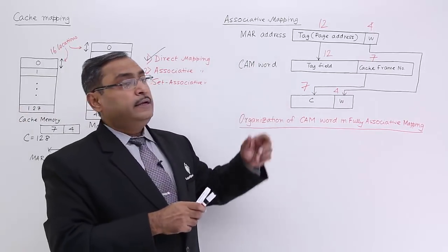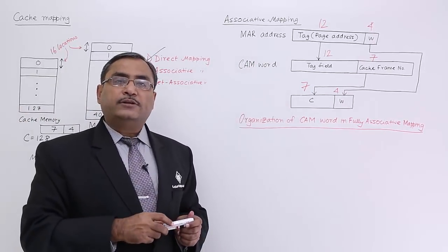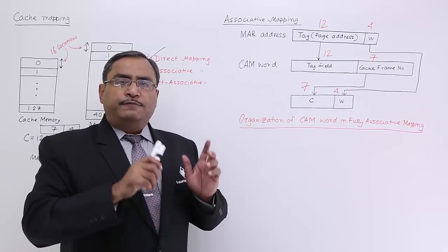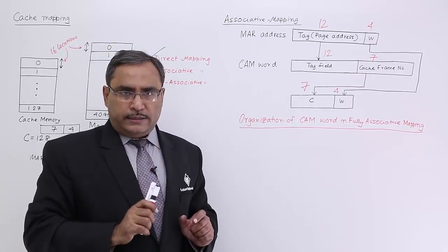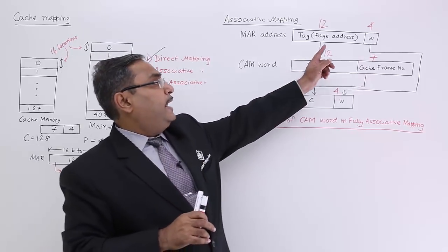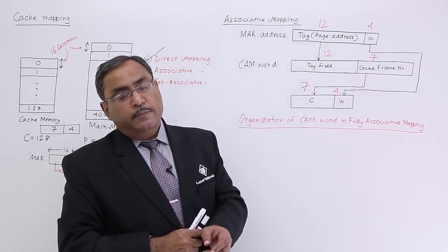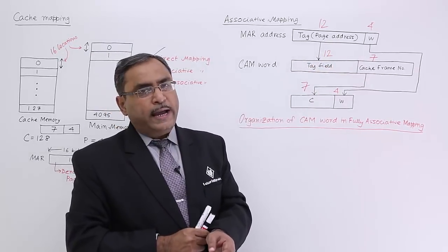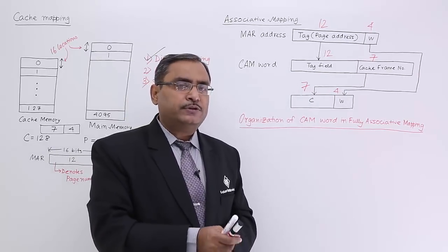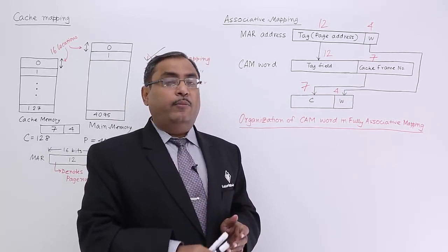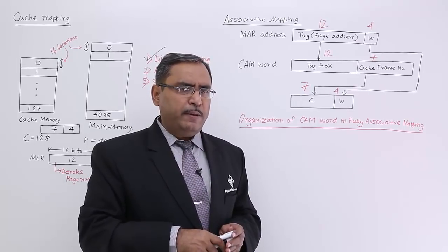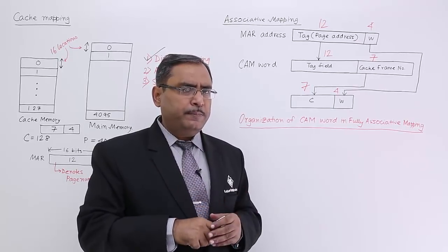So that is my fully associative mapping. In case of fully associative mapping, what is the advantage? The advantage here is that main memory any page can be loaded onto the cache memory any frame. So that is the flexibility. And what is the disadvantage of fully associative mapping?